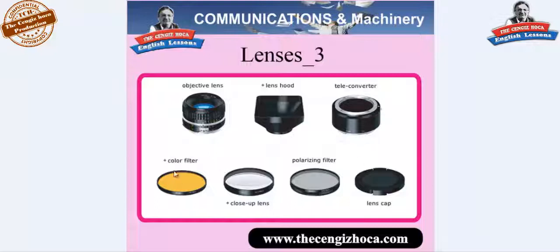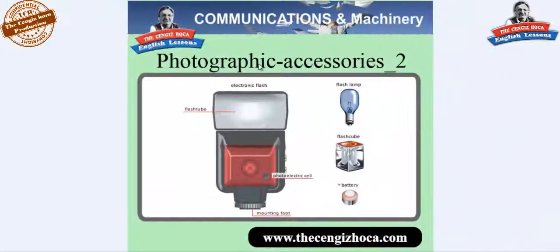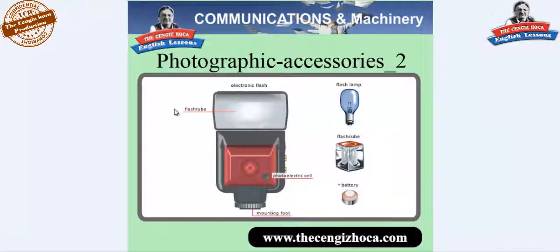Color filter, close-up lens, polarizing filter, lens cap. Photographic accessories — tripod: camera screw, camera platform plate, quick release system, side tilt lock, horizontal motion lock, column crank, column, column lock, camera platform lock, camera platform, panoramic head, cable shutter release, telescoping leg, air bulb shutter release. Photographic accessories — electronic flash: flash tube, photoelectric cell, mounting foot, battery, flash cube, flash lamp.